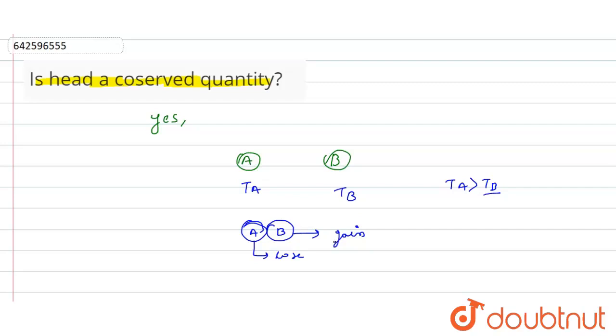heat lost by A is equal to heat gained by B. Therefore, heat is conserved.